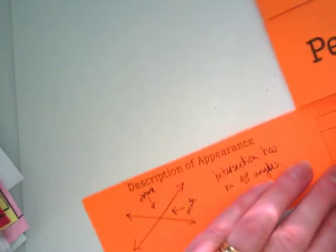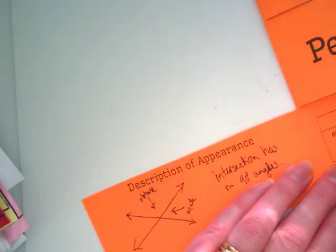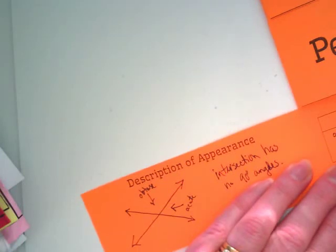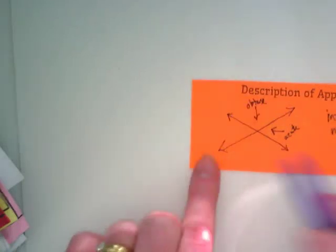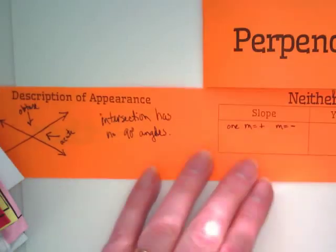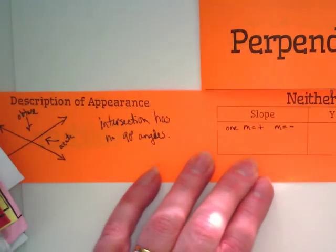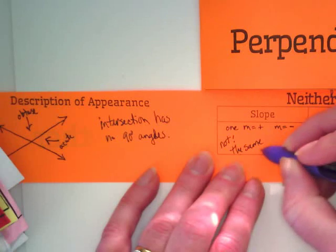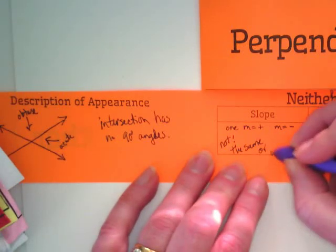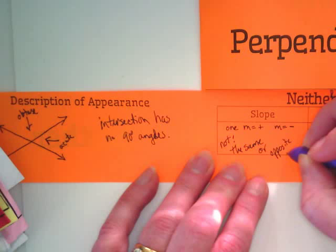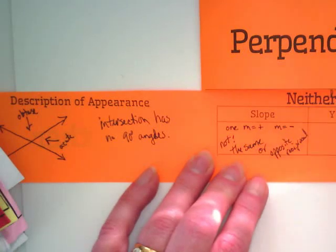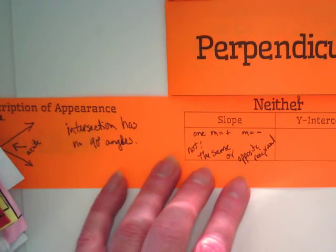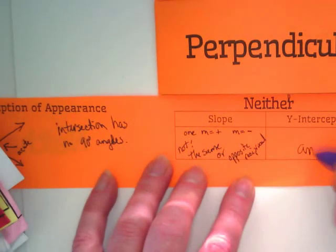So what's true about the slope here? Well, one slope is positive and one slope is negative. If you look at my two lines, this one is positive and this one is negative. They are not the same.